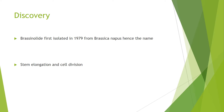Brassinolide, which was shown on the previous slide, was first isolated in 1979 from Brassica napus, also known as oilseed rape, and this is hence the name of brassinosteroids. They were first discovered for their biological activity of stem elongation and cell division.